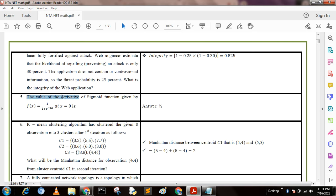Next question: The value of derivative of sigmoid function is given by, if x equals this. After the first derivative of this value and putting x = 0, we get the answer 1/2.